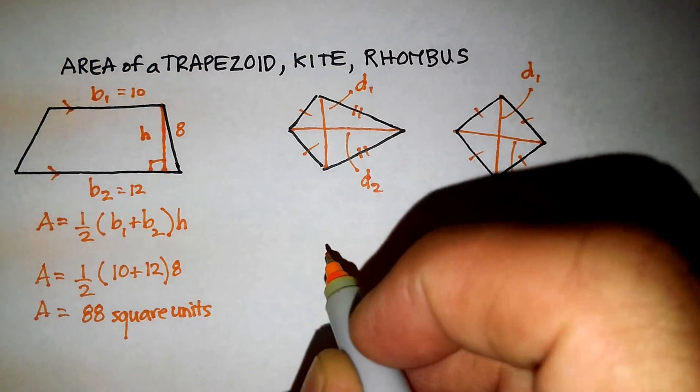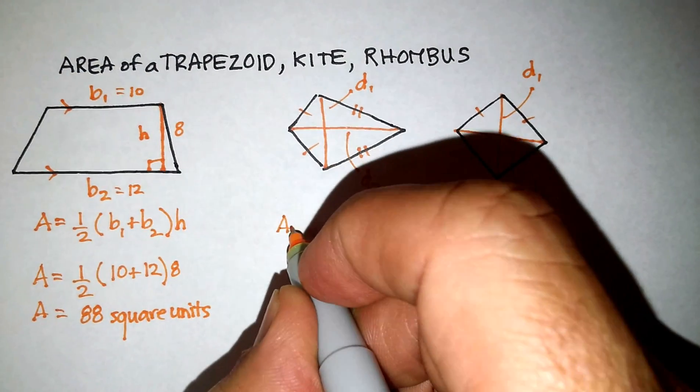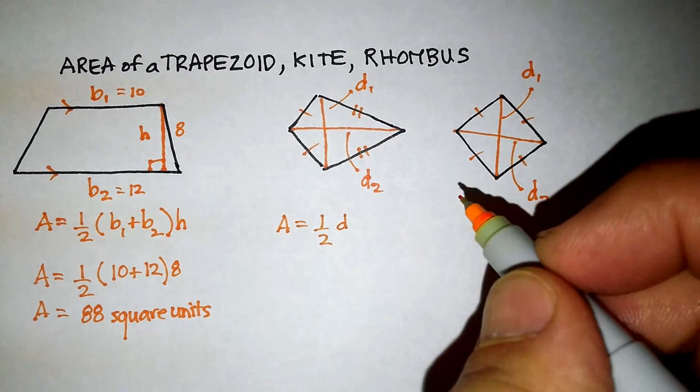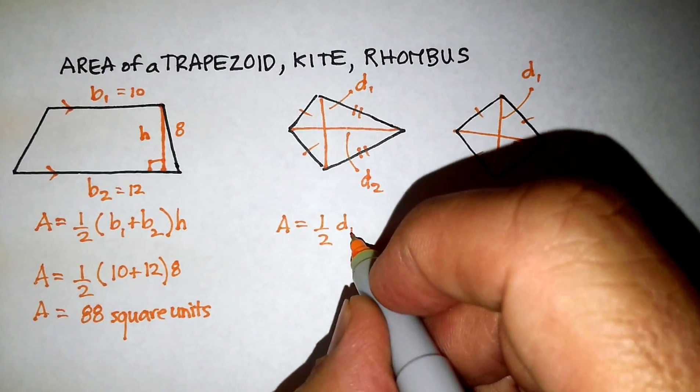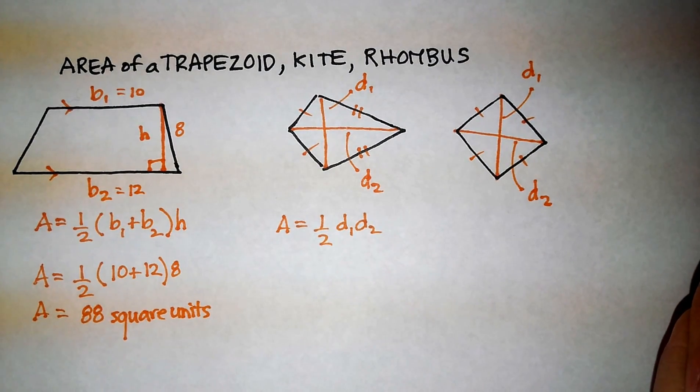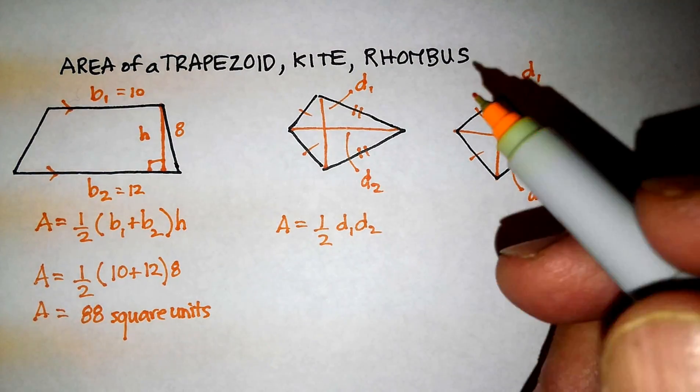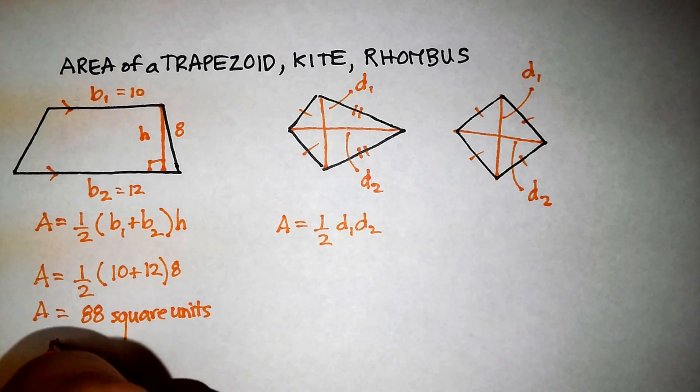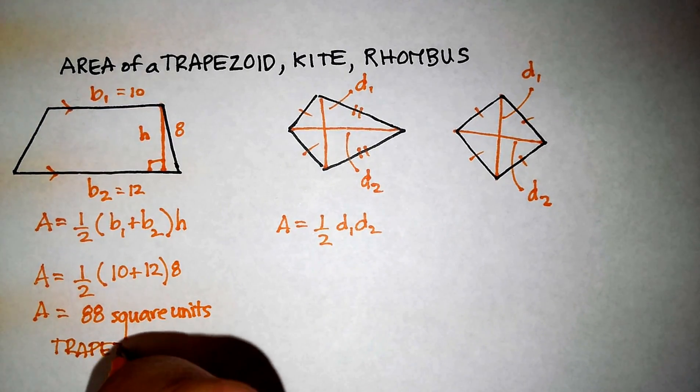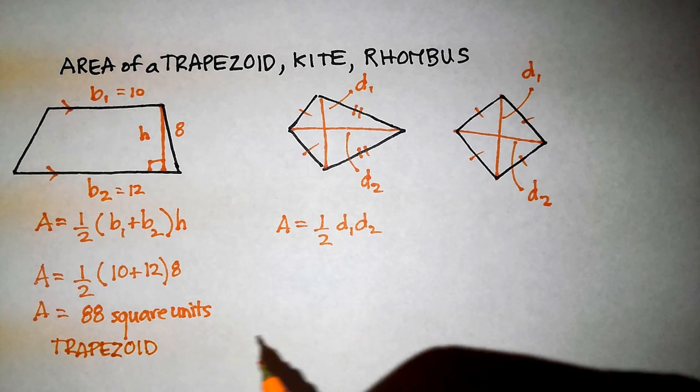And the area of a kite is equal to 1 half the d1 times d2. So again, this is probably one of the easiest formulas that you'll ever learn. Actually, let me just go ahead and put trapezoid over here so we're just clear on what that is.